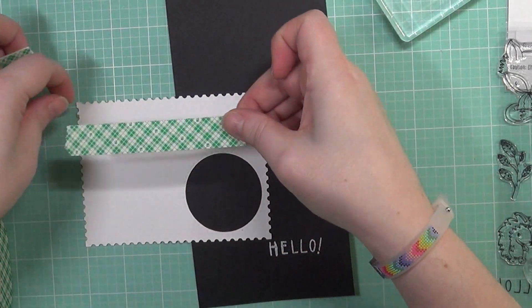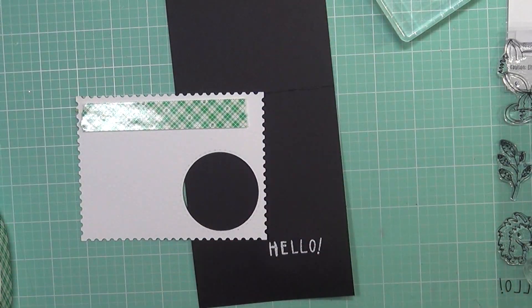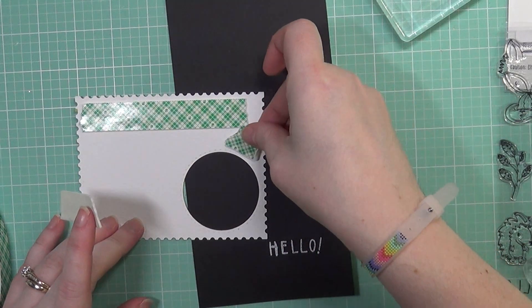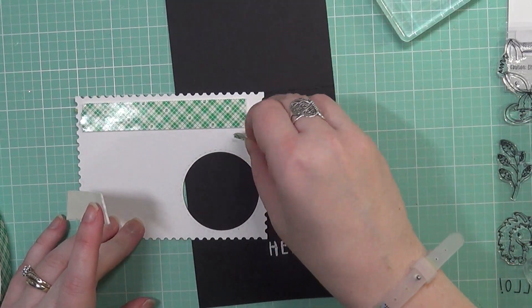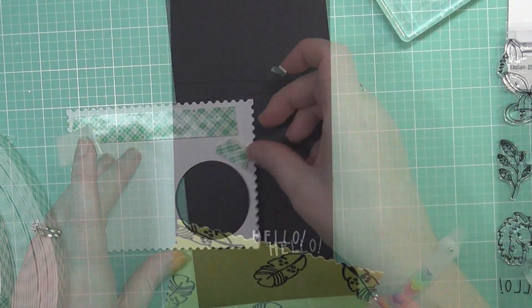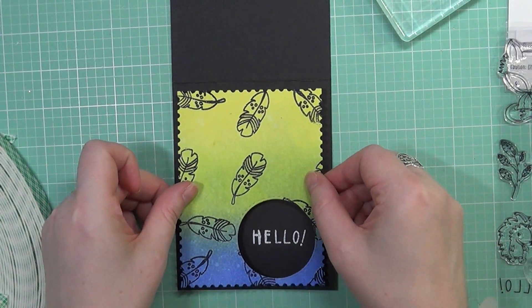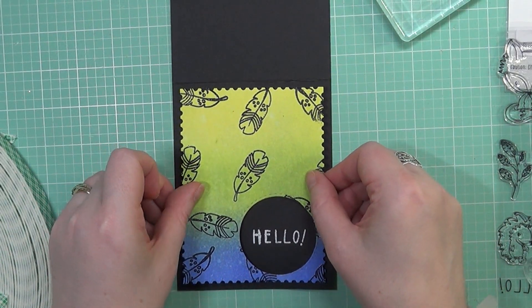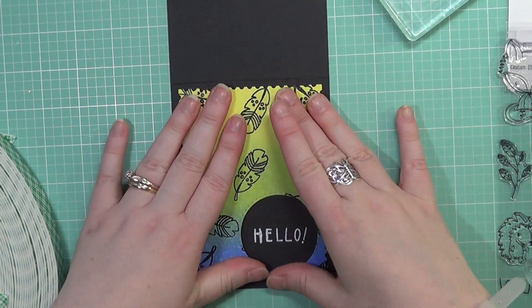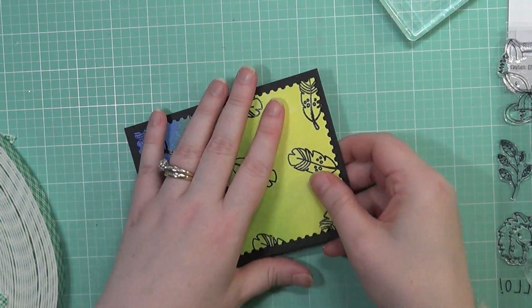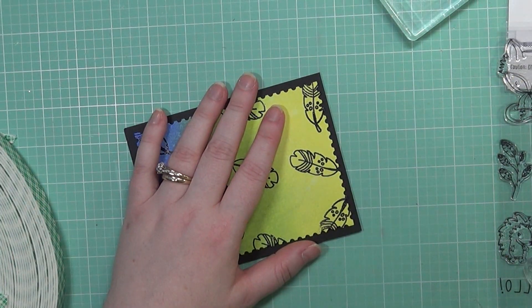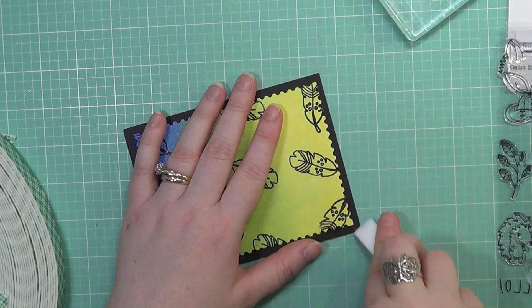Now what I'm going to do is add some foam adhesive to the back of this panel, and I'll be really generous with my adhesive here because I don't want this to warp or anything if I put it through the mail. I'm just going to add that to my card base and make sure that I get that good crease down onto my card, on the top edge of the card there, and that completes our card for today.